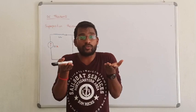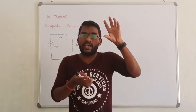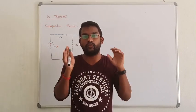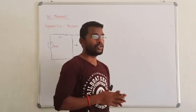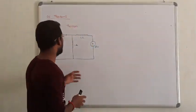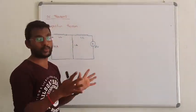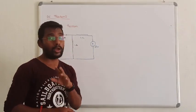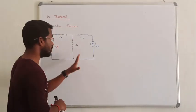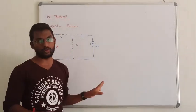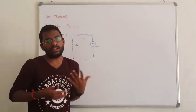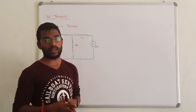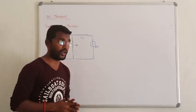Two AC sources with two different frequencies, or AC plus DC — you have to apply superposition theorem. If we have problems with only DC sources, you don't need to use superposition. You can use basic normal analysis methods like mesh analysis, whatever you know, it's simple to solve the problem.